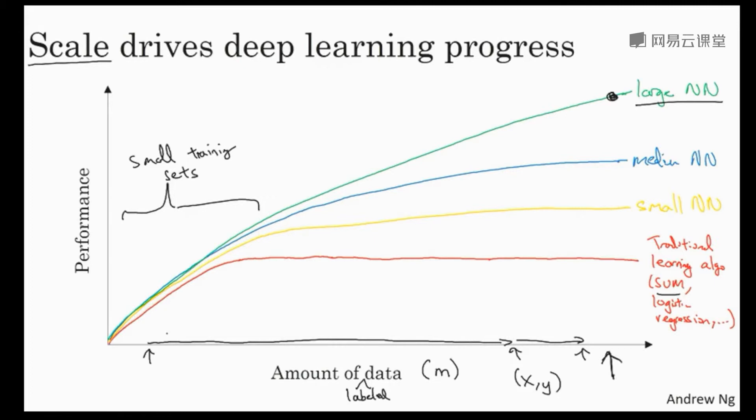So in this region to the left of the figure, the relative ordering between the algorithms is not that well defined. And performance depends much more on your skill at hand engineering features and other little details of the algorithms. And it's only in this big data regime, very large training sets, very large M regime in the right, that we more consistently see large neural nets dominating the other approaches.